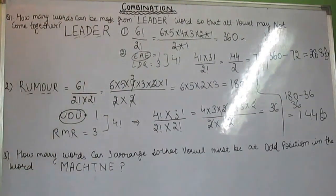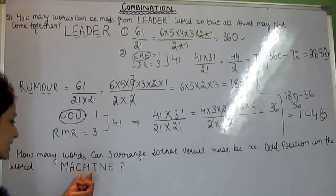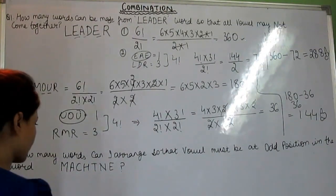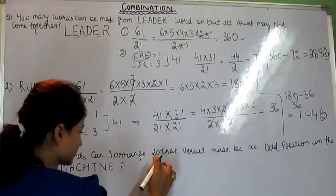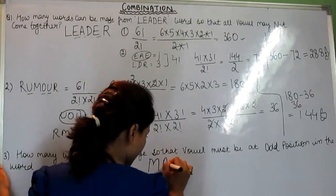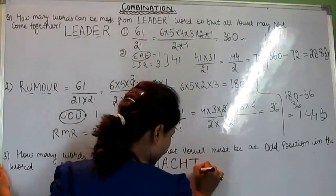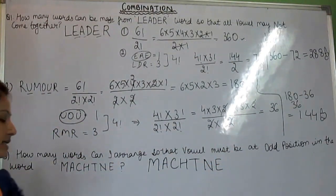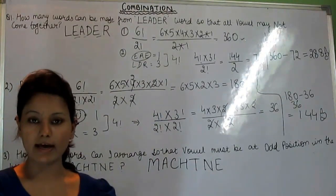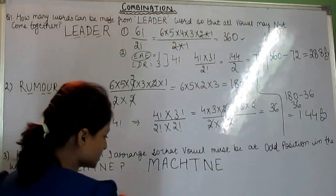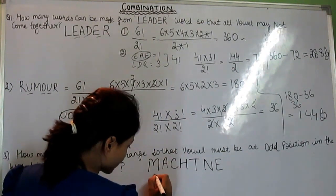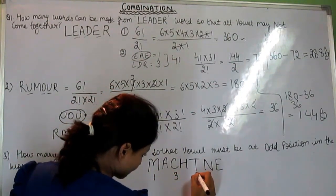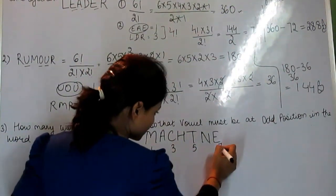The third question is: how many words can be arranged so that the vowel must be at all odd positions? The word is MACHTN E — letters M, A, C, H, T, N, E. We need to arrange so that vowels must be at all odd positions. The odd positions are: 1, 3, 5, and 7.